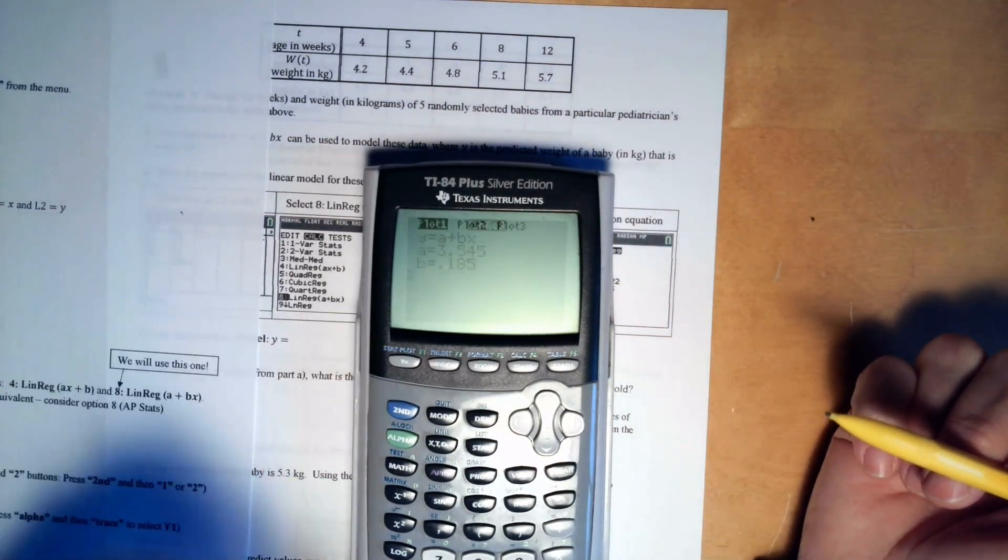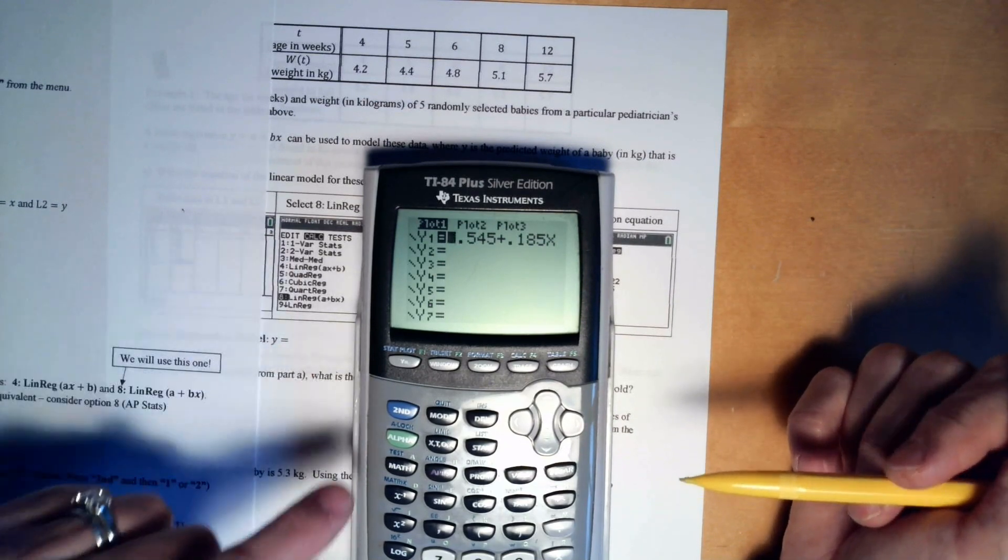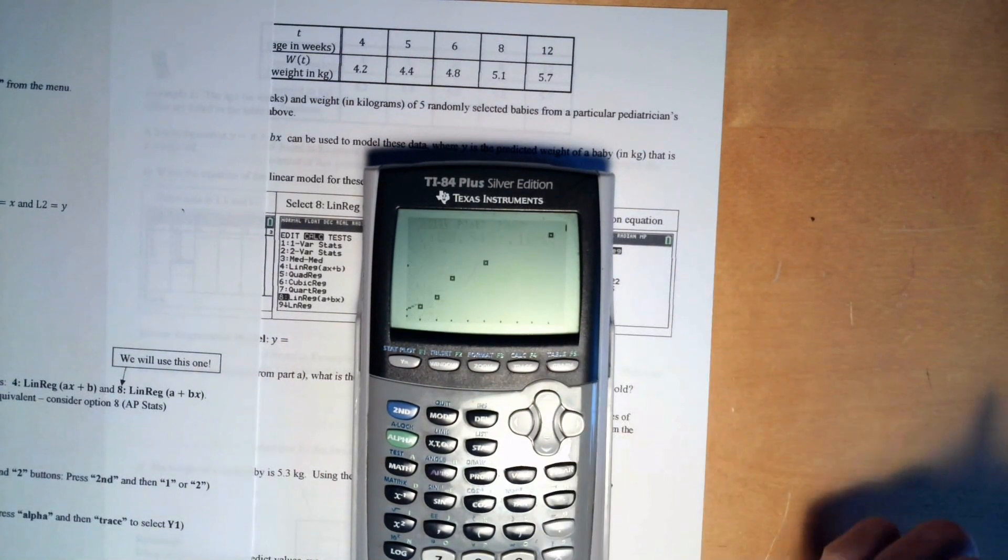So if you go to y equals, the equation's in there like I told it to. And the plot right now is still on. So if I press graph, you can see how the line goes right through it.